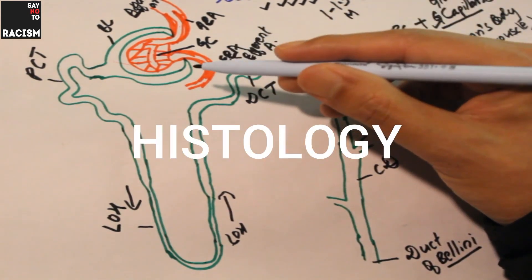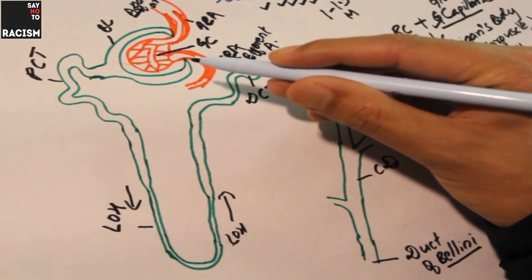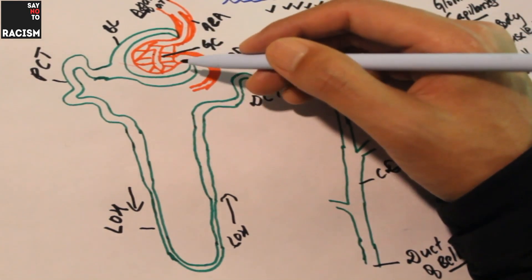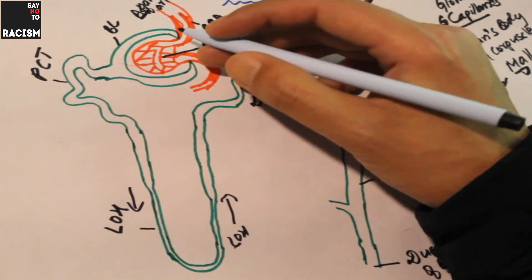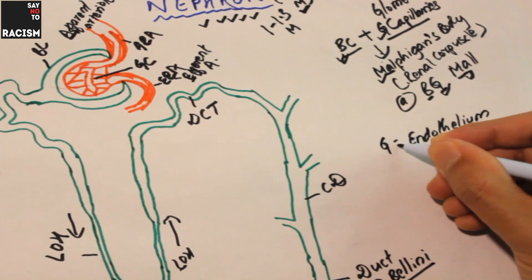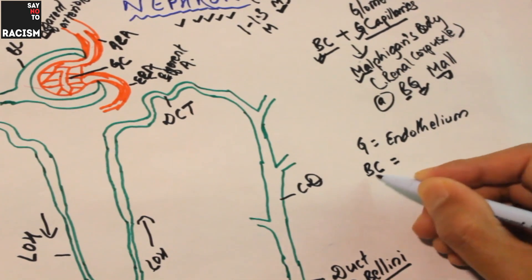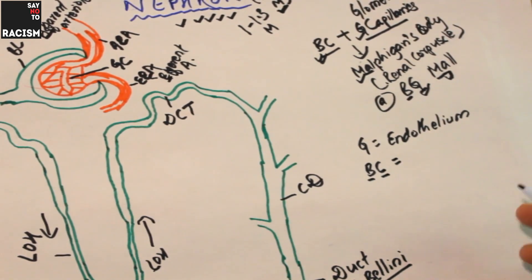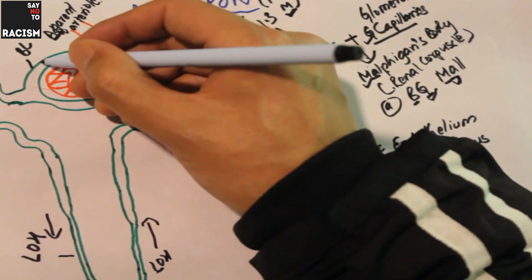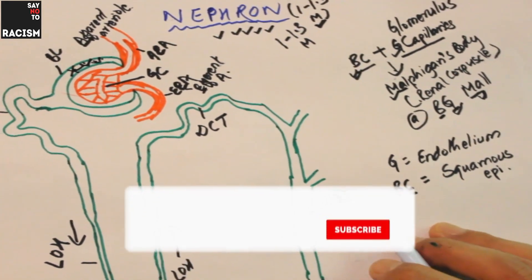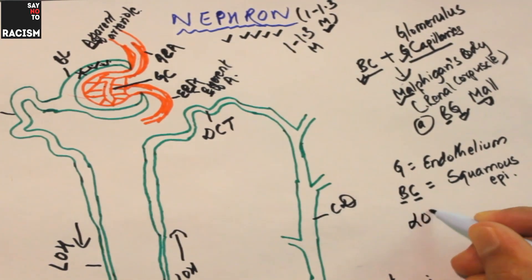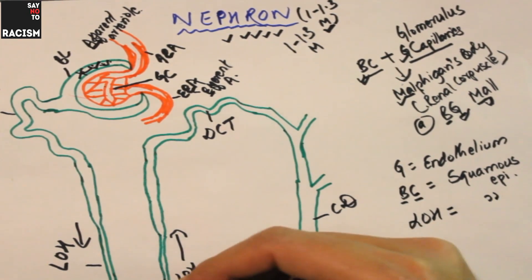Now we'll talk about histology - histology means study of the tissues. We'll talk about the lining epithelium. The lining of the Bowman's capsule is squamous epithelium. The lining of the loop of Henle - it is also squamous epithelium. So the loop of Henle is lined by squamous epithelium.